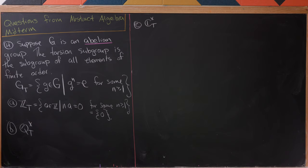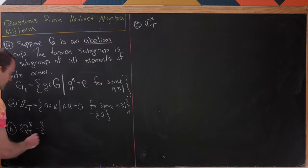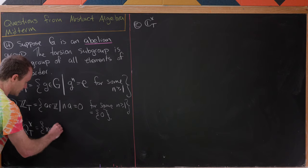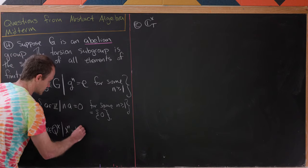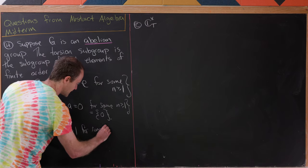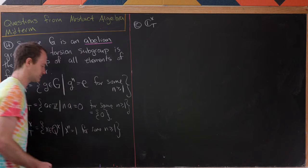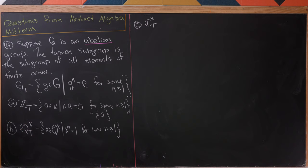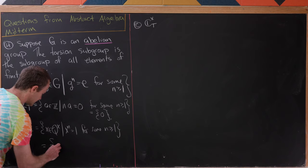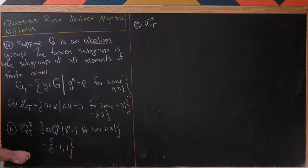Now let's look at the torsion subgroup of the multiplicative group of non-zero rational numbers. Here our operation is multiplication. We've got x in Q* such that x to the n equals 1 for some n ≥ 1. It's well known that among rational numbers the only things that raise to a power to give you 1 are 1 and negative 1. So this is going to be equal to {−1, 1}. Notice 1¹ = 1, whereas (−1)² = 1. So that's the torsion subgroup of the rationals.